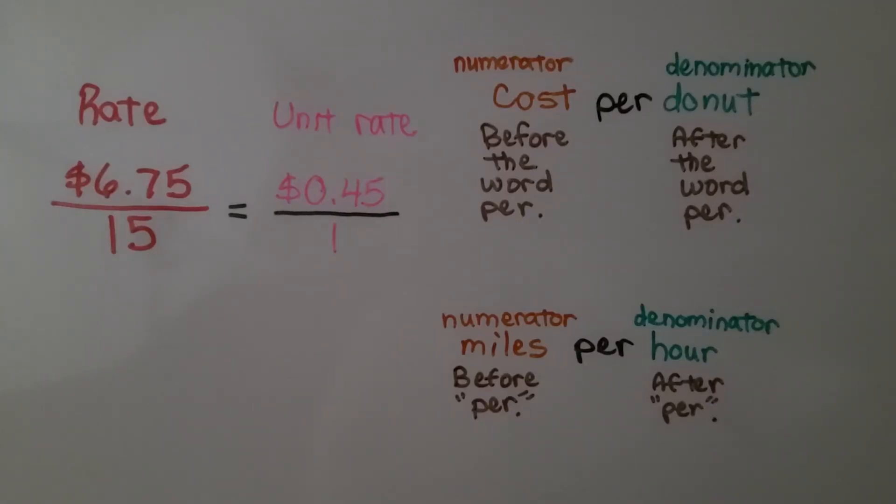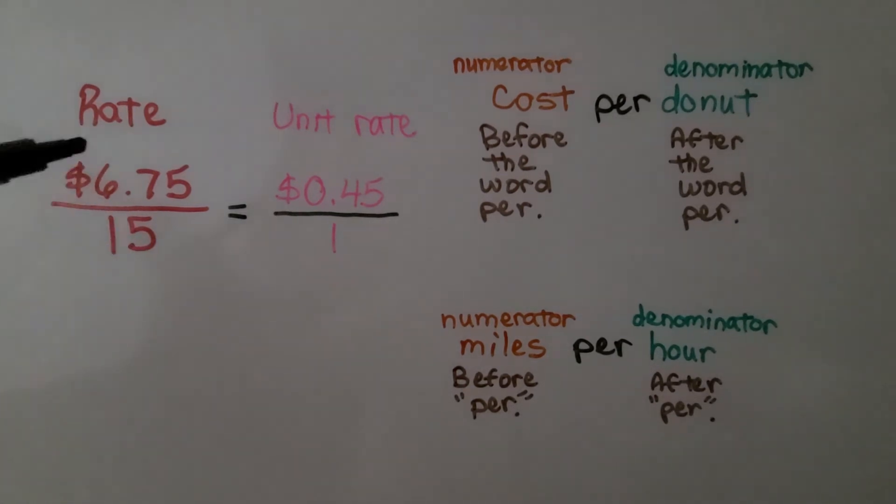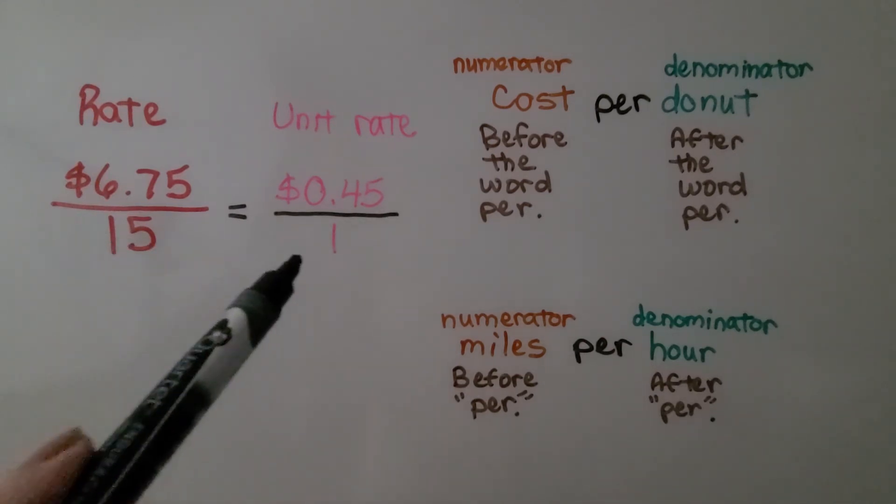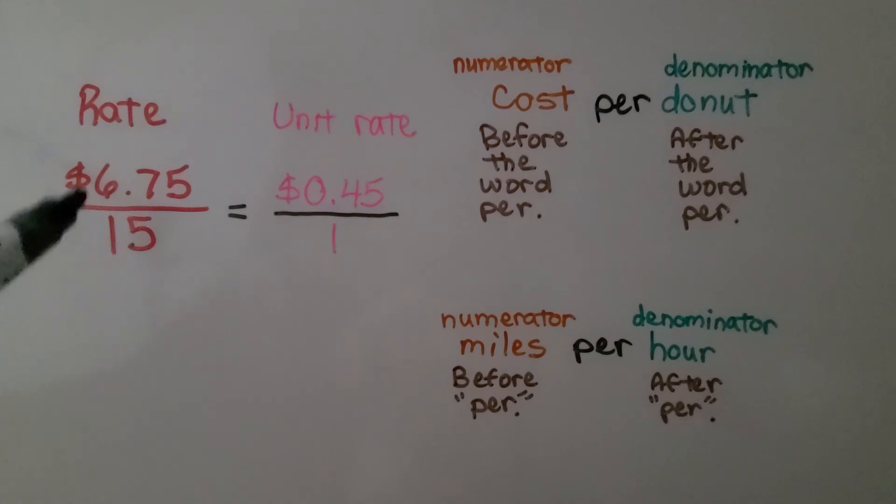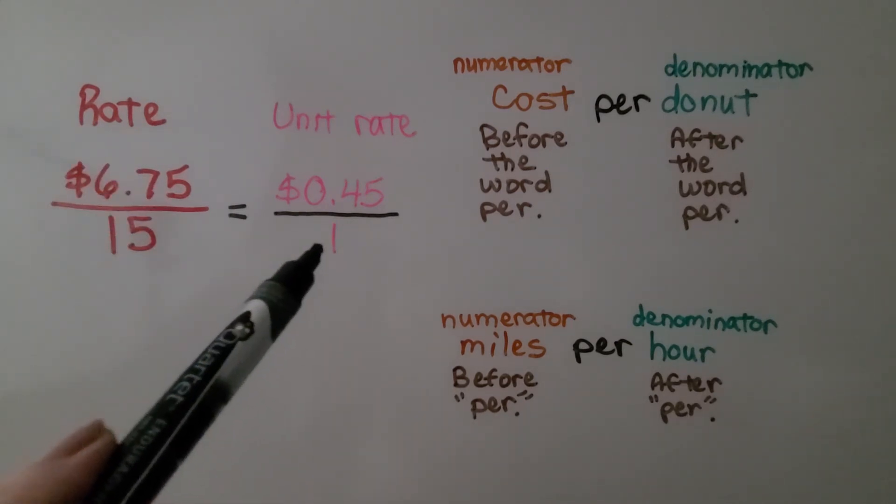It can be very confusing trying to write the rate from the word problem. Our rate for our donut problem was the money amount over the number of donuts, because we were looking for one donut. We had 15 donuts. This entire thing is the rate. Our unit rate is 45 cents for one.